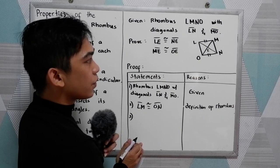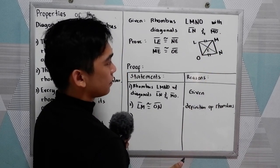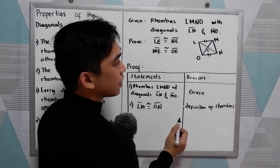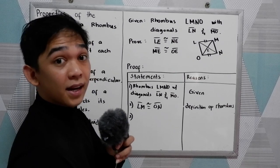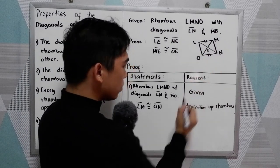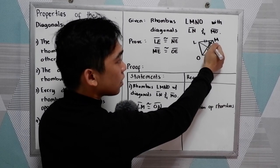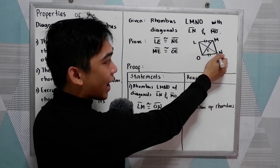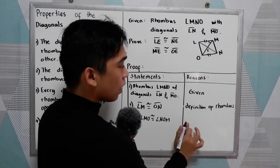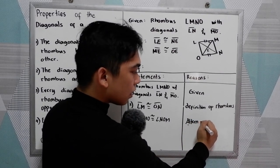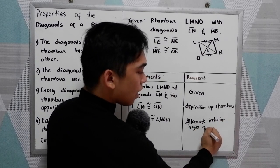Third, we know that the two sides are parallel and we have intersecting lines. So we can use the definition and properties of parallel lines. Therefore, angle LMO is congruent to angle NOM. The reason is: alternate interior angles are congruent.